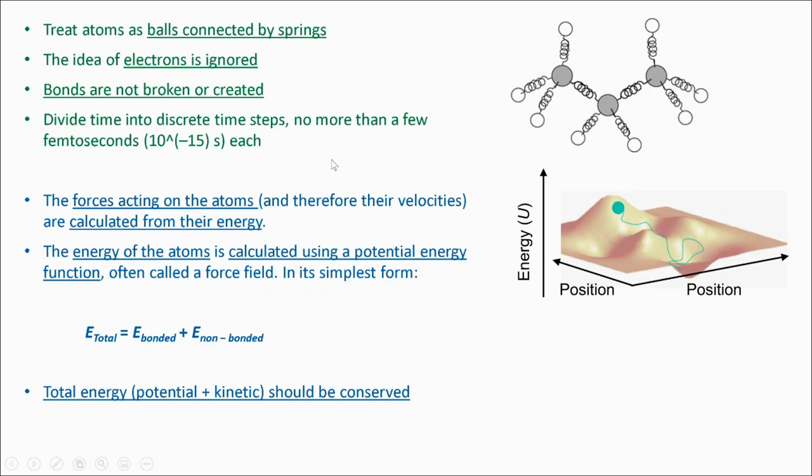The forces acting on the atoms and therefore their velocities are calculated from their energy. Atoms will move in a specific direction that best decreases their energy. We can imagine this as a three-dimensional field where the atoms or imaginary balls roll down the direction of the gradient.